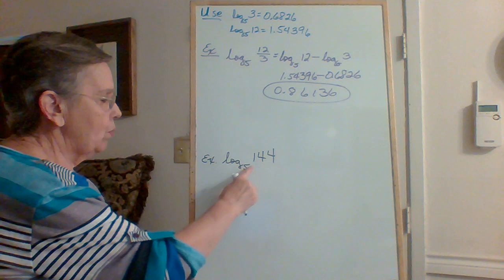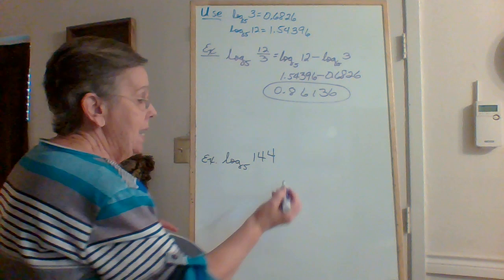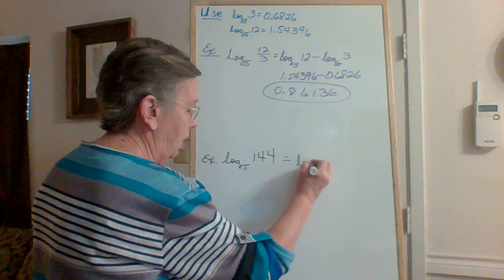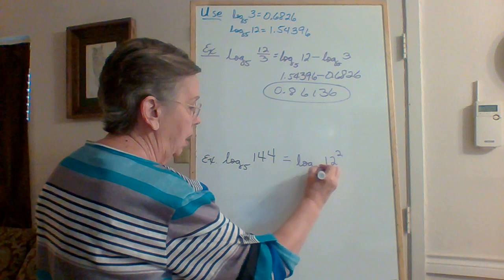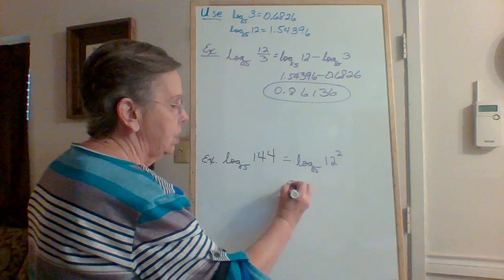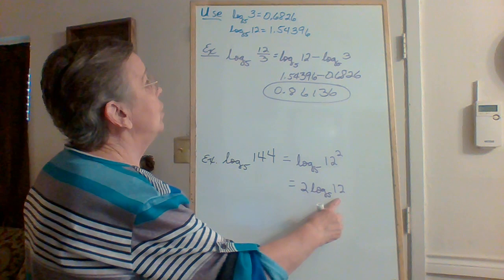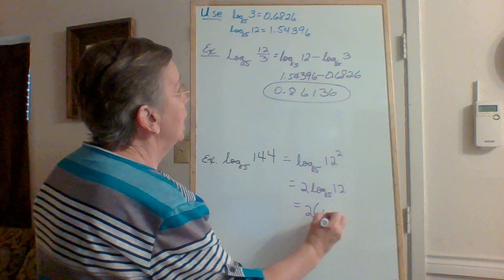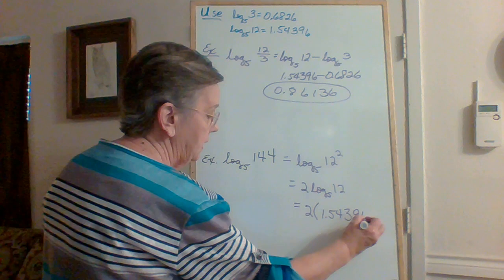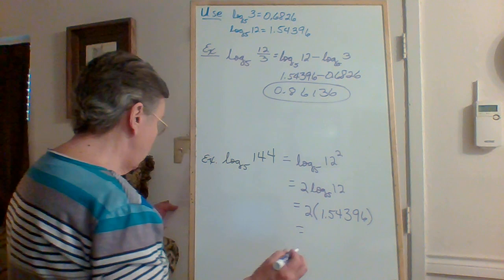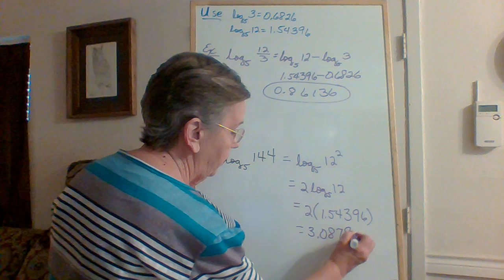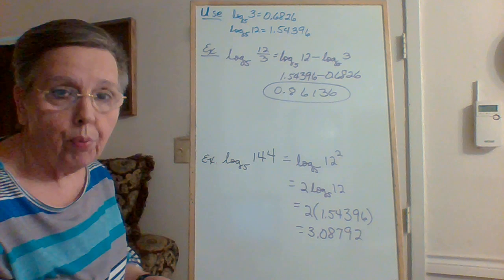Let's try again: find the log of 144 with base five. I know that 12 squared is 144. With an exponent, I multiply it out in front, so I get two times the log of 12 with base five. I know that value is 1.54396, so that's two times 1.54396, which gives me 3.08792. You are going to be solving some problems and you're going to be given some facts like this.